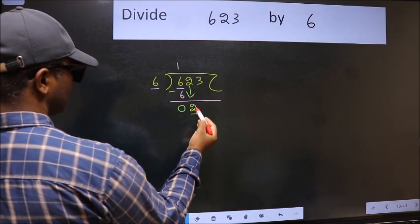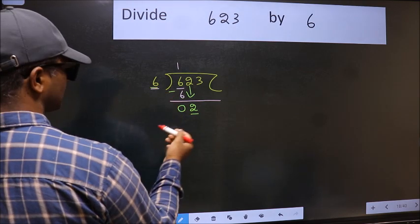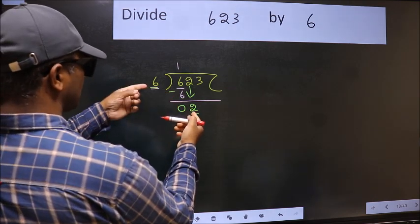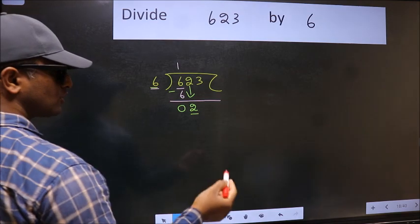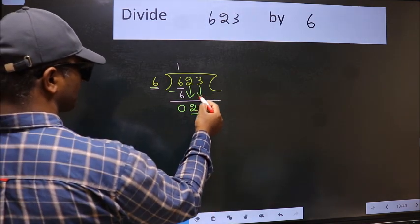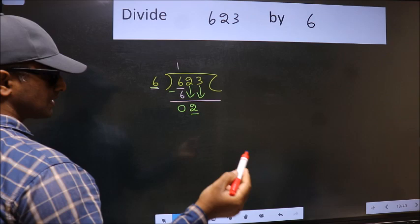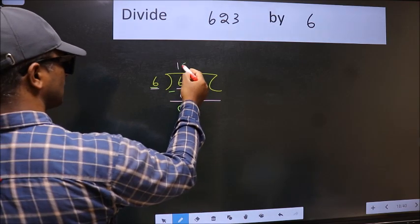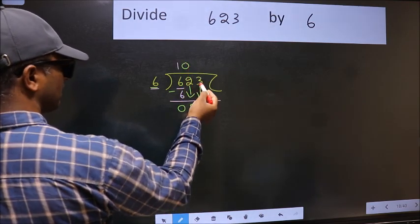Now here we have 2 and here 6. 2 is smaller than 6, so we should bring down the second number. And the rule to bring down the second number is we should put 0 here, then only we can bring this number down.